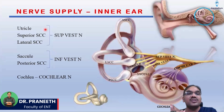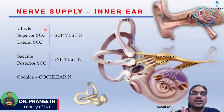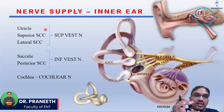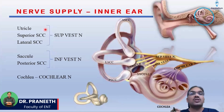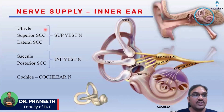The cochlear nerve carries information towards the brain. And from the vestibule, the vestibular nerve will come. The vestibular nerve and cochlear nerve join together to form the eighth cranial nerve — that is your vestibulocochlear nerve.